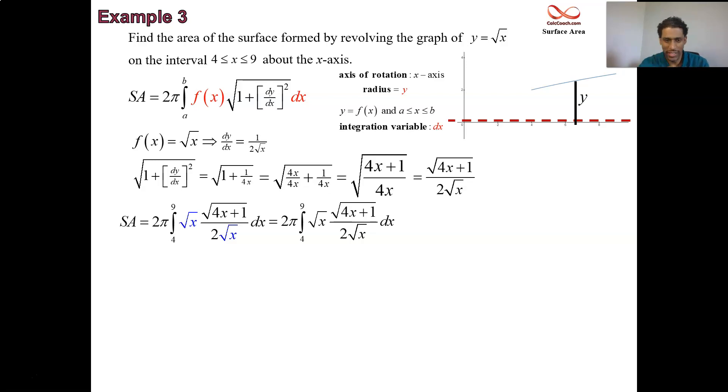In this next click, do the cancellation at least. So we have the root x's canceling and the twos canceling. Leaving us with just the root of 4x plus 1 and a pi on the outside.